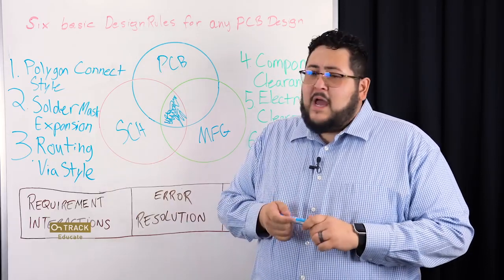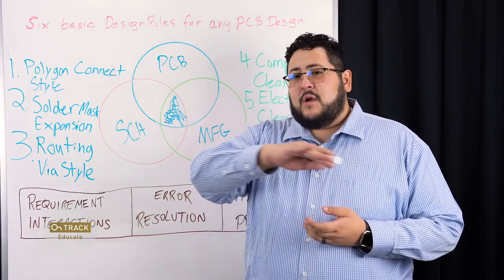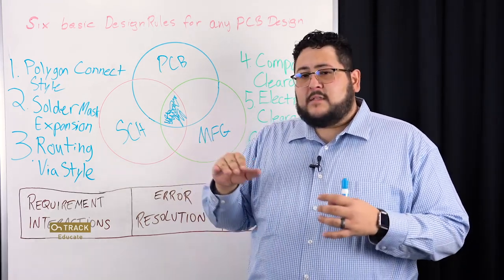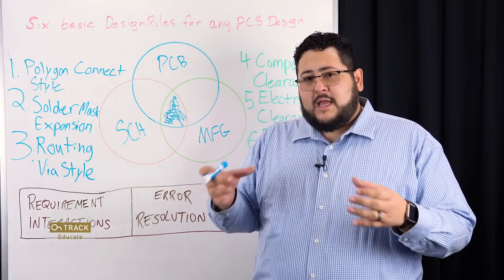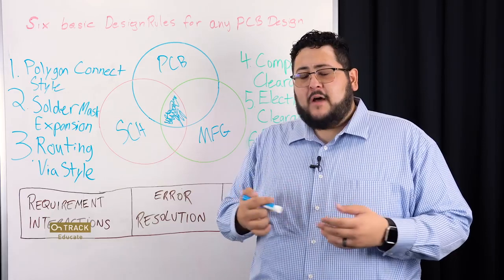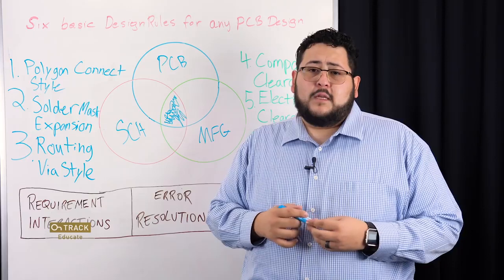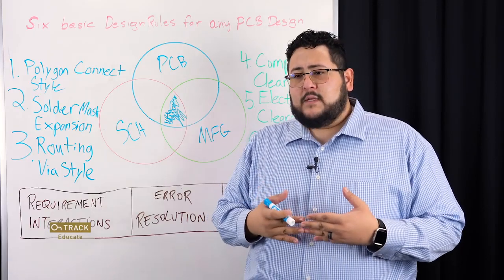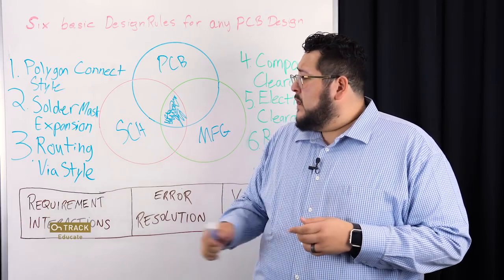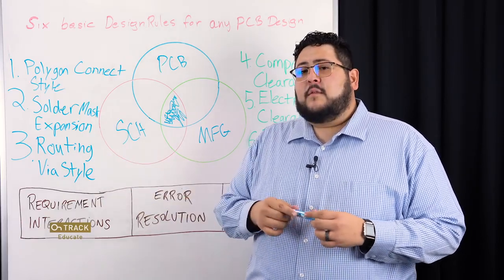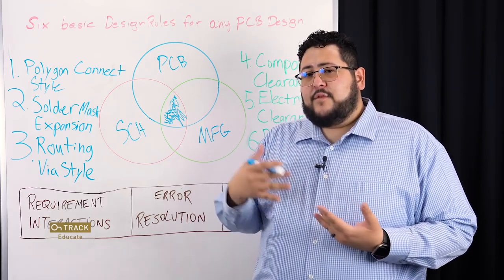The style of your routing vias is also important to make sure that you are using the right type of vias. If you're using a via where the diameter-to-hole ratio is off, it's possible that it can't work with the current that you are trying to drive through it. You could get fused vias and have different problems. So it's really important to associate different via styles for the different routes that you have throughout your design.